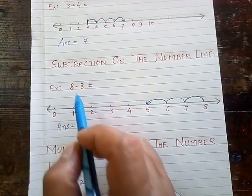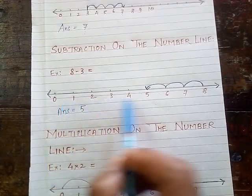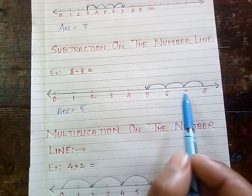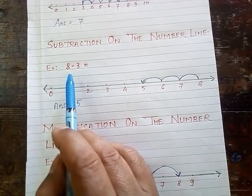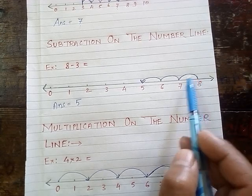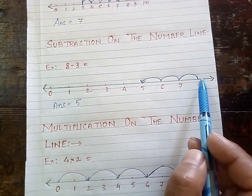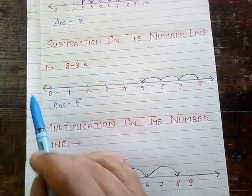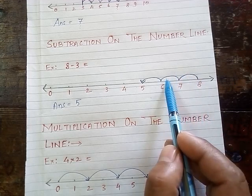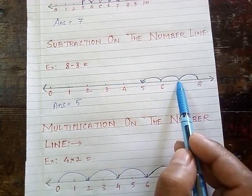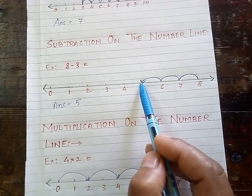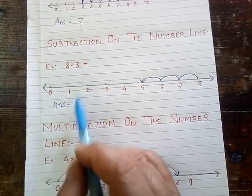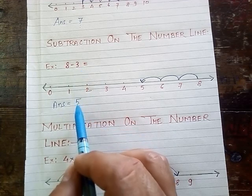Again, subtraction on the number line. For the question 8 minus 3, from 8 we will move 3 steps to the left side. As you are looking: from 8, we move 1st step, 2nd step, and 3rd step to the left side, and we will reach at 5. So 5 is the required answer. 8 minus 3 is equal to 5.